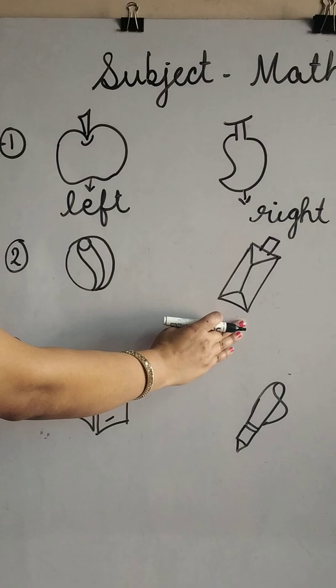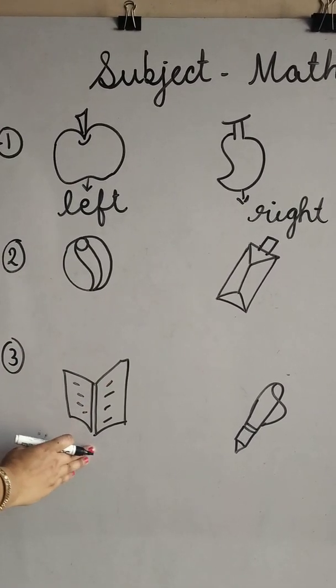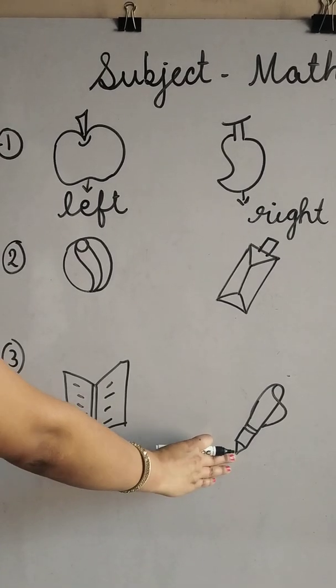Bat is on right side. Book is on left side. Pan is on right side.